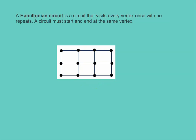Euler circuits and paths cover every edge in a graph. Hamiltonian circuits, on the other hand, are circuits that visit every vertex in the graph — every vertex once with no repeats. Because it's a circuit, it must start and end at the same vertex. Let's find a Hamiltonian circuit in this diagram. Following the path, I'm trying to touch every vertex — every dot — and that got me back to where I started, so that's a Hamiltonian circuit. I don't cover every edge, and that's okay; all we're worried about is touching every vertex.